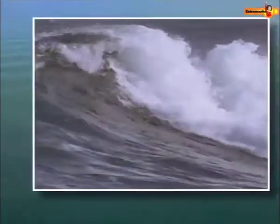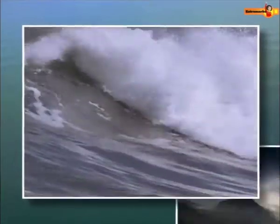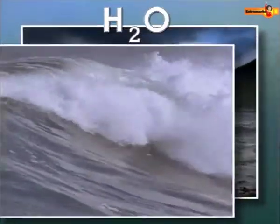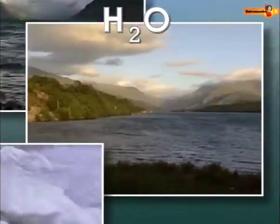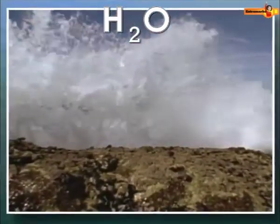Water covers about 71 percent of Earth's surface. It is a chemical compound whose chemical formula is H2O, which means that water is made up of two elements: hydrogen and oxygen.